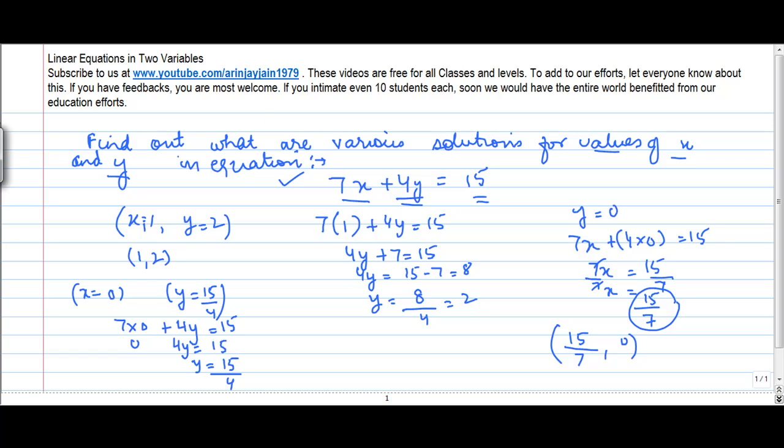So like this, what I did was, I have got multiple solutions for this equation. (1, 2) is one of the solutions. x equals 0, y equals 15 by 4 is another solution. x equals 15 by 7 and y equals 0 is the third solution. So if you are asked to find out solutions for a particular equation, just keep on equating a value to one of the variables. For the other variable, you can solve the equation and get the value.